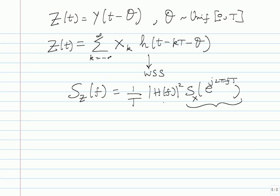This expression you should know by heart - this last lecture was very crucial and we will use most of what I did throughout the rest of the course. Make sure you revise the Gaussian random process material, transformation of random variables, discrete time Fourier transform, Fourier transforms, and Z-transforms. If you are looking for specific books: Barry, Lee and Meserschmitt covers these topics in chapters 1 to 3, and Proakis 5th edition in chapters 1 and 2.